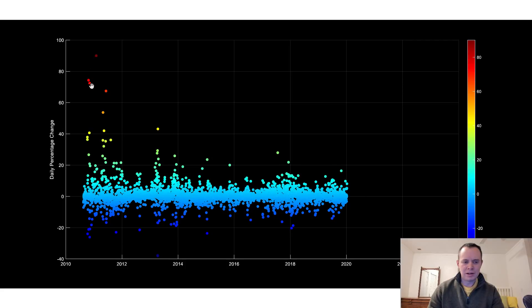There's a few data points way up here where you see daily changes of 70, 80, 90%. But that was in the very early days. And in fact, in the last several years, we haven't really seen daily changes of Bitcoin that are greater than 25%.